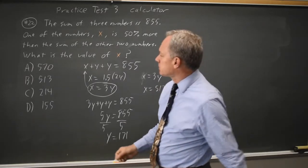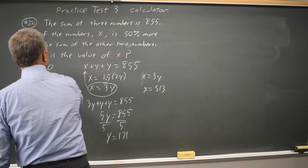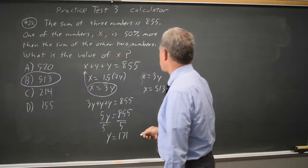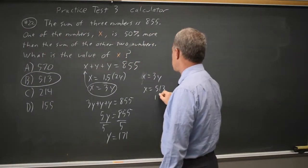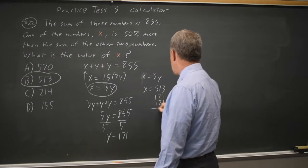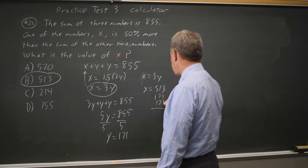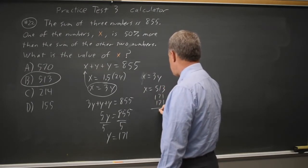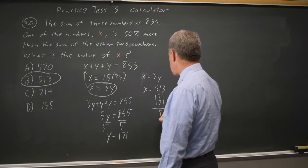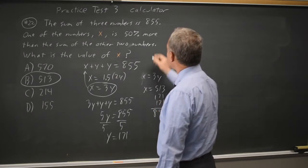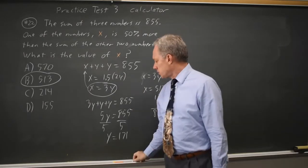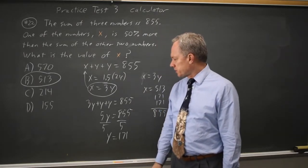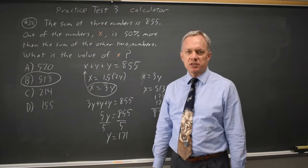And to check my answer, which is b, I'm going to find x plus y plus y. Adding those gives 855, which is the correct sum. So y equals 171 is correct and x equals 513 is correct.